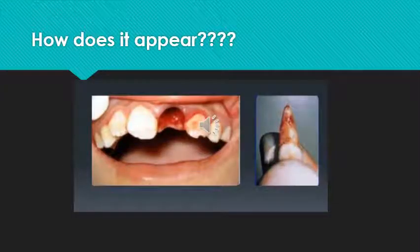So how do you know that the tooth is completely avulsed and not just fractured or traumatized? You can see a completely void socket which is devoid of the tooth and there will be bleeding observed. You will not see any evidence of tooth at all within the socket or the hole which is seen in the alveolar bone.